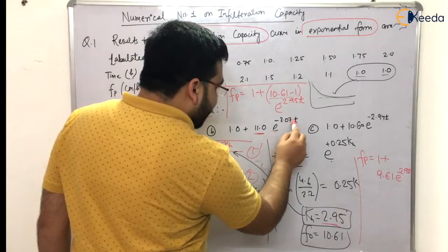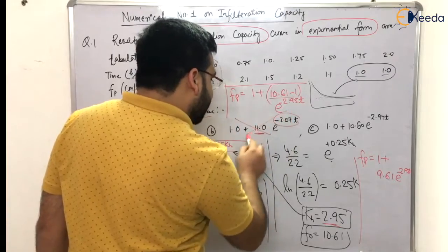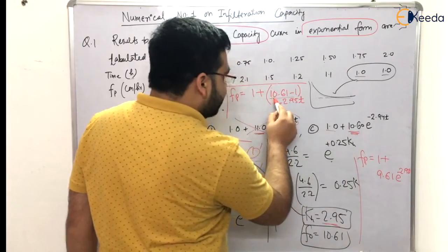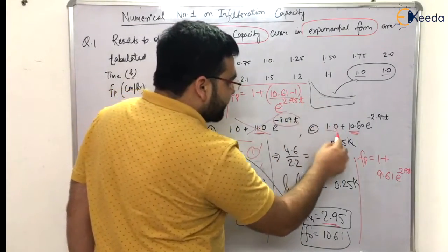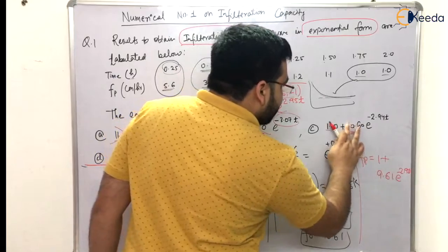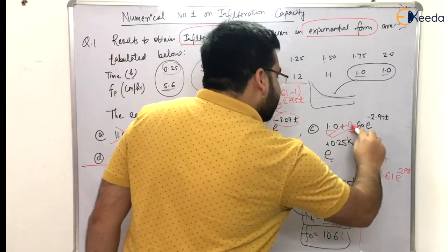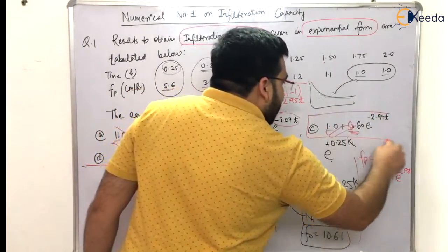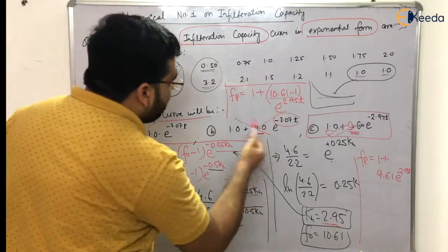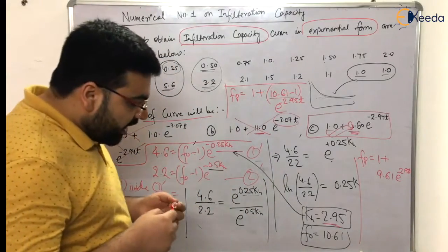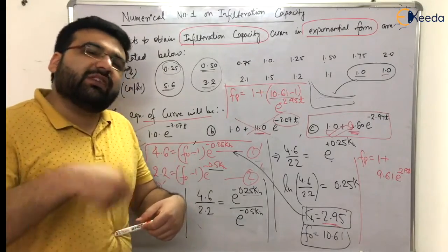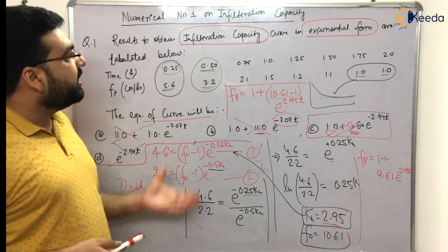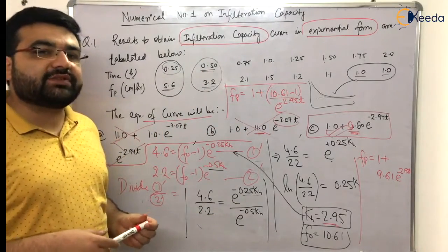Looking at the options: the option showing 11.0 × e^(−3.something) is discarded. The correct form is 1.0 + 9.6 × e^(−2.95T) — there may be a small rounding difference in the options, but 9.6 is accepted. I hope you have understood how to solve numericals based on Horton's equation. Let us move to the next video to solve one more numerical to further strengthen concepts on infiltration capacity. Thank you.